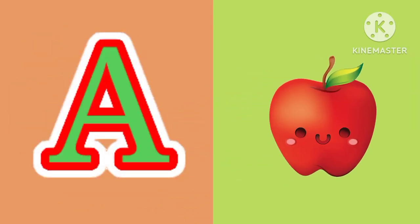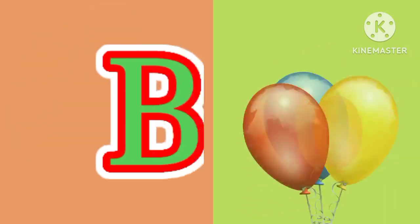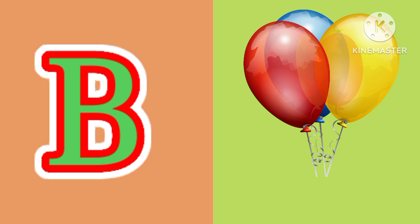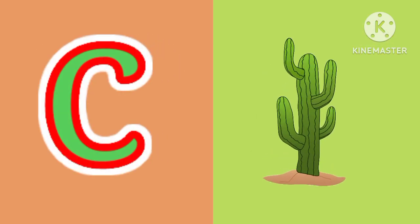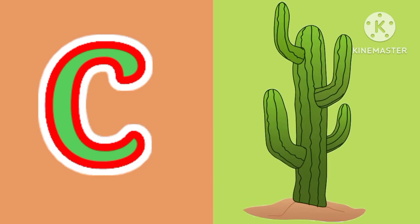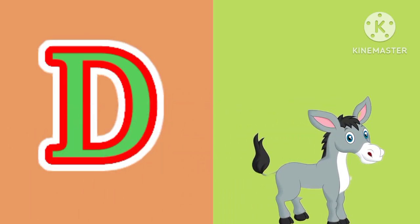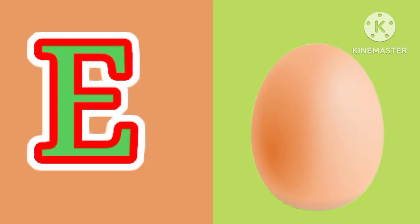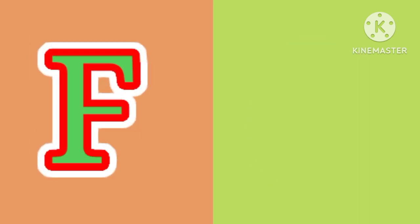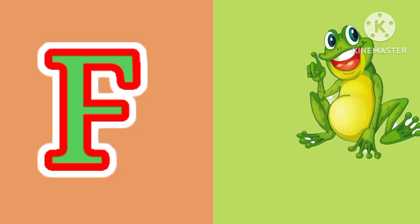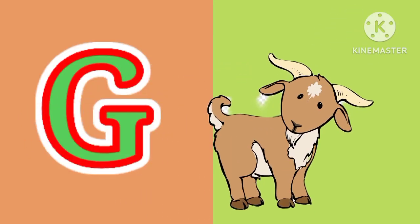A for apple, B for balloon, C for cactus, D for donkey, E for egg, F for frog, G for goat.